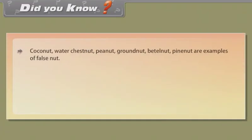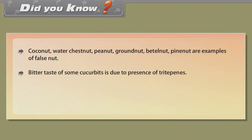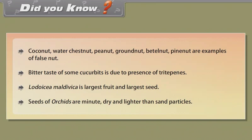Did you know? Coconut, water chestnut, peanut, groundnut, betel nut, and pine nut are examples of false nuts. The bitter taste of some cucurbits is due to the presence of triterpenes. Lodoicea maldivica has the largest fruit and largest seed. Seeds of orchids are minute, dry, and lighter than sand particles.